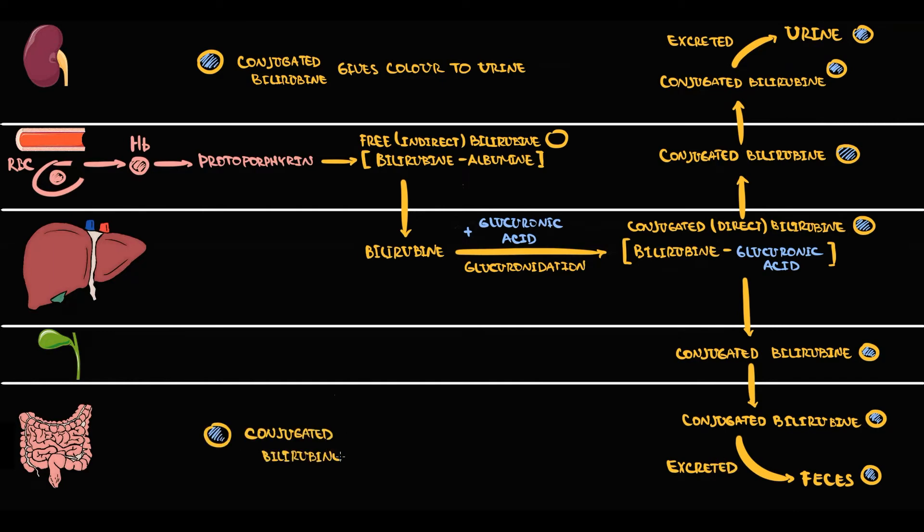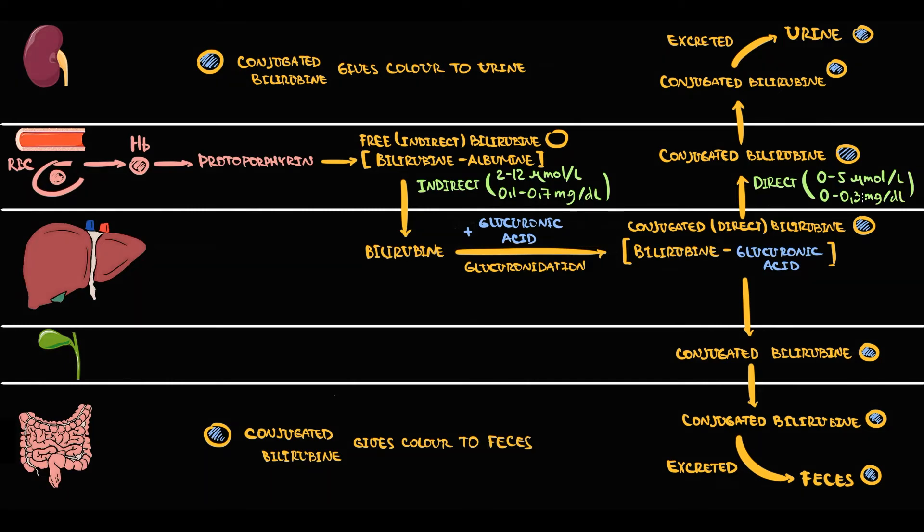The normal level of unconjugated bilirubin in the blood is between 2 and 12 micromoles per liter. Because the major portion of bilirubin that comes to the liver is excreted into the bile, the level of conjugated bilirubin in the blood is lower. The normal level of conjugated bilirubin in the blood is between 0 and 5 micromoles per liter. So the level of total bilirubin in the blood is between 2 and 17 micromoles per liter.